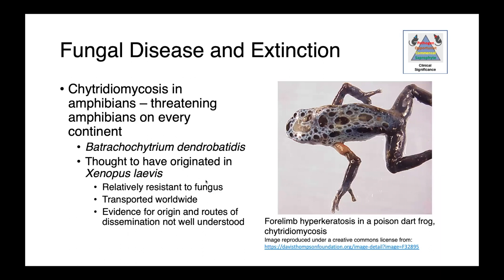Chytridiomycosis in amphibians is threatening populations on every continent where they are found. This infection is caused by Batrachochytrium dendrobatidis and is thought to have originated with Xenopus laevis, the African clawed frog, which is used globally in research and is relatively resistant to the fungus — a plausible mechanism for its worldwide spread, though not yet well understood. In this image of a poison dart frog, you can see hyperkeratosis on the forelimb.